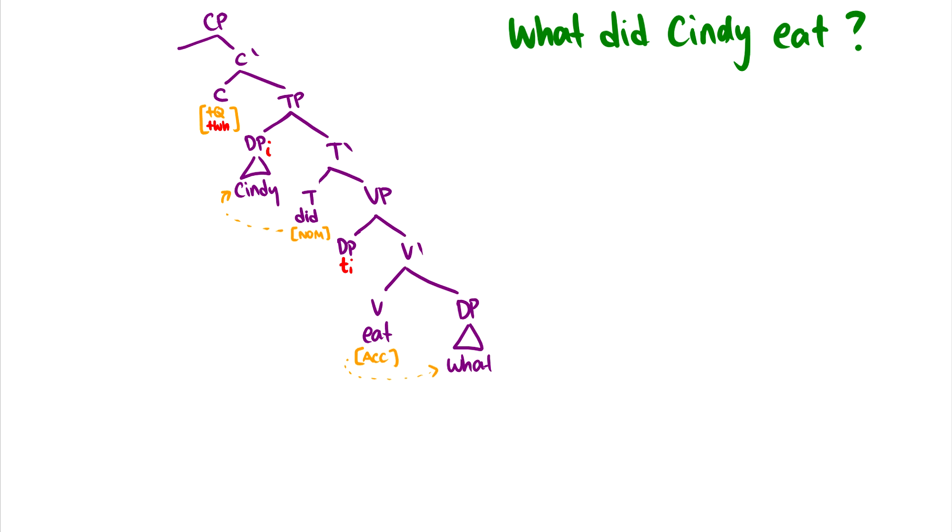Now, the other ones where there's WH movement are a little bit more complicated. So here we have the tree so far. So Cindy starts at spec VP and moves up to spec TP to get case. What starts in the same position as the echo question, but now we make use of the CP and the C head. So what's special about the C head?